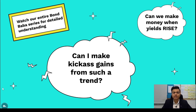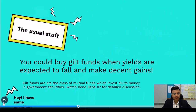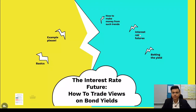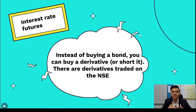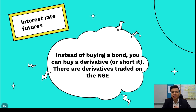The basic idea is simple: instead of buying the bond, we buy the derivative of it. Suppose the yields are expected to go up — when yields go up, bond prices fall. But we cannot short the bond. There is no mechanism to short a bond directly. So that's why we use the derivative — we either buy the derivative or short the derivative.